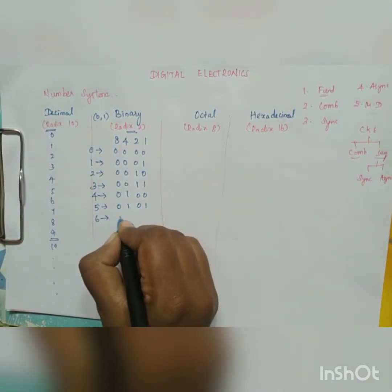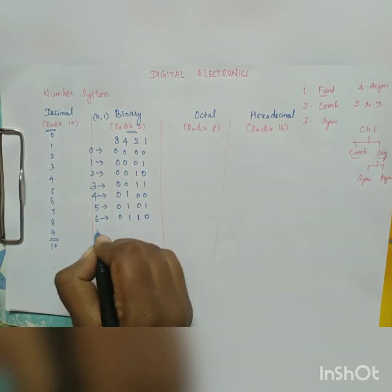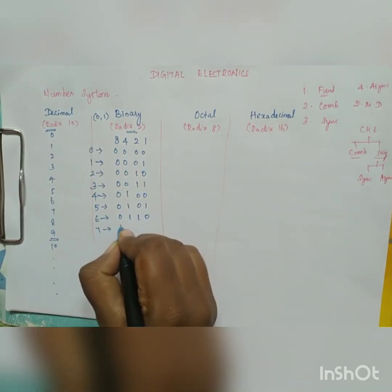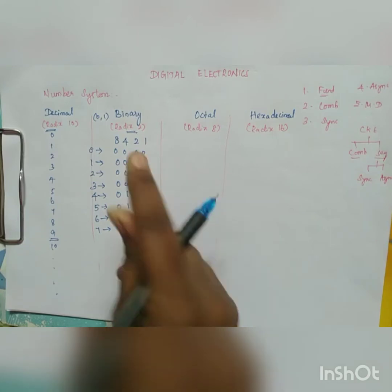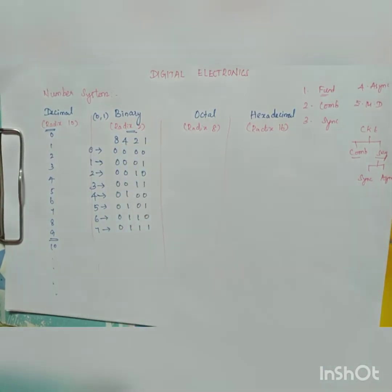Decimal 4 is 0100. The binary equivalent for 6 is 0110. The binary equivalent for 7 is 0111, because 4 plus 2 is 6, and 6 plus 1 is 7.